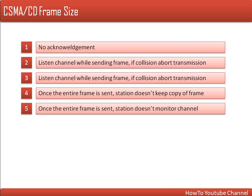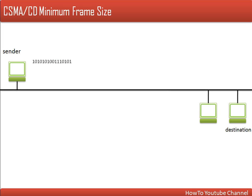There is a constraint: if a sender wants to send a frame in a network, that sender has to monitor the channel while sending the frame. Looking at this network, while it's sending, if there is any collision, that collision effect has to reach the sender before the sender sends the last bit.